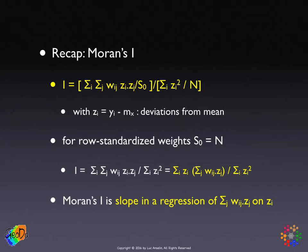As we've seen, when the spatial weights are row standardized, the sum of all the weights in one row equals one, and there are as many rows as observations, so S0 equals n. And with S0 equal to n, the denominators in both parts of the ratio cancel each other out.